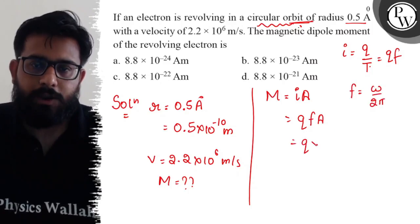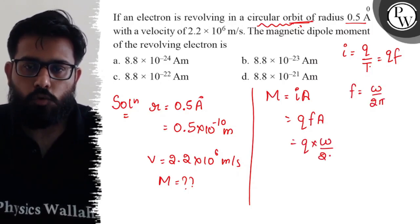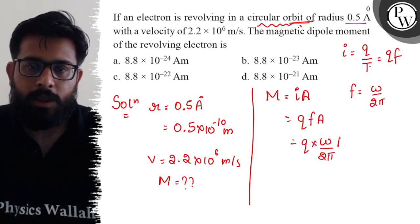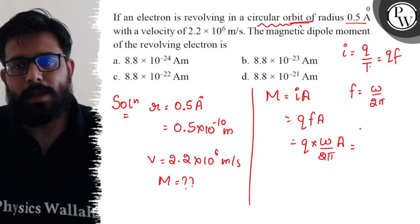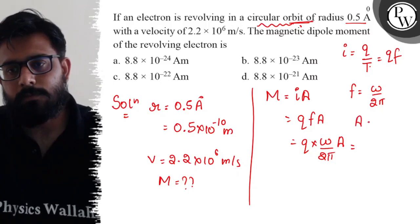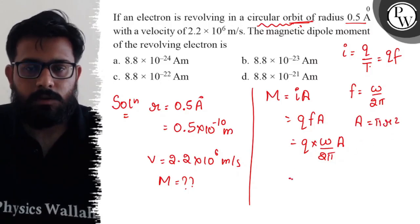This gives us M = Q × (ω / 2π) × A. Since A = πr², we can write M = Q × ω × πr² / 2π, which simplifies using v = ωr to give the magnetic dipole moment formula M = QVR / 2.